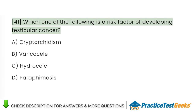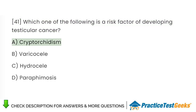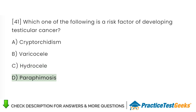Which one of the following is a risk factor for developing testicular cancer? A. Cryptorchidism. B. Varicocele. C. Hydrocele. D. Paraphimosis.